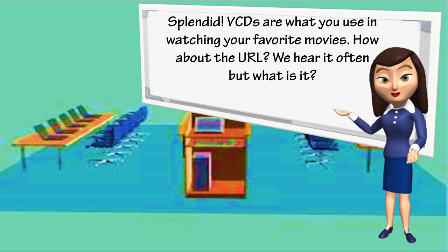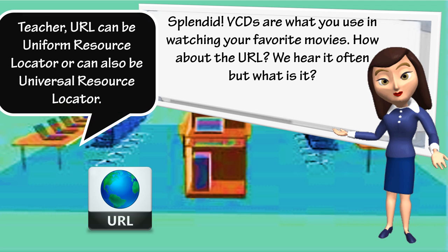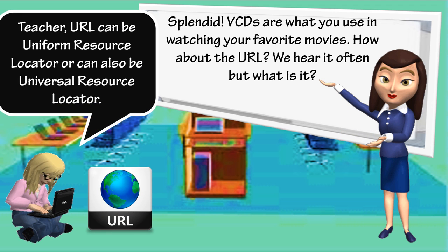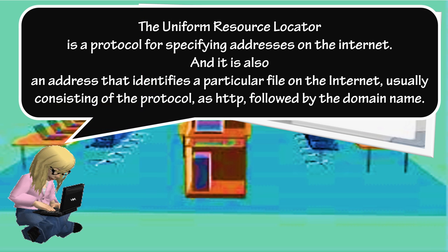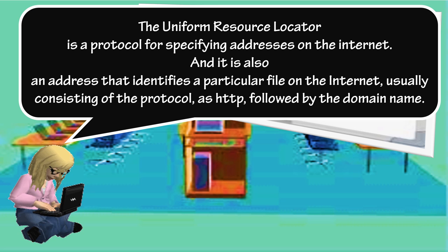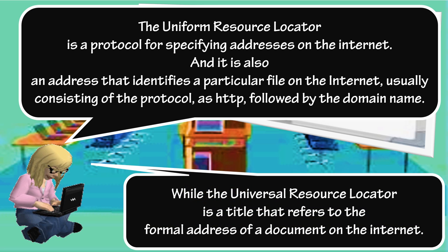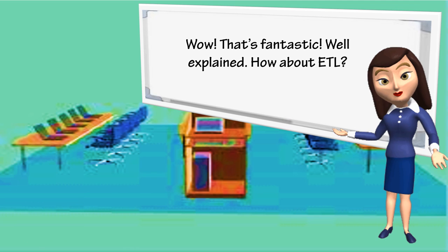How about the URL? We hear it often but what is it? The URL can be Uniform Resource Locator or can also be Universal Resource Locator. The Uniform Resource Locator is a protocol for specifying addresses on the internet, and it is also an address that identifies a particular file on the internet, usually consisting of the protocol, as HTTP, followed by the domain name. While the Universal Resource Locator is a title that refers to the formal address of a document on the internet.